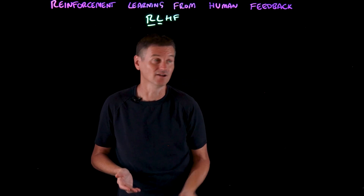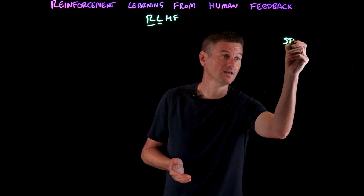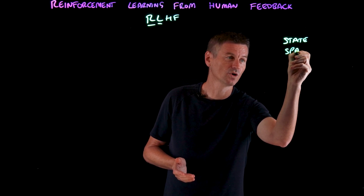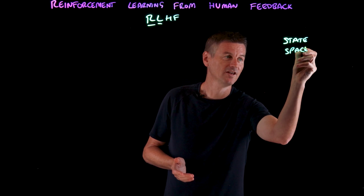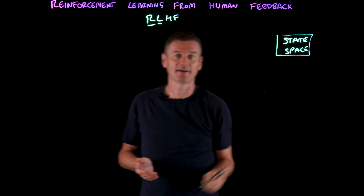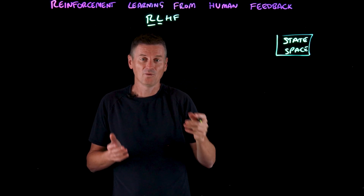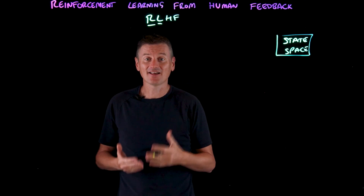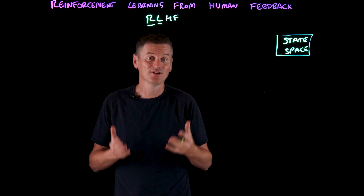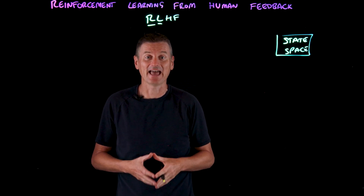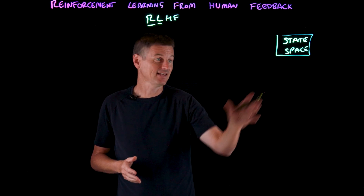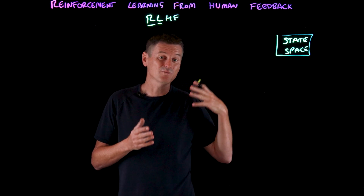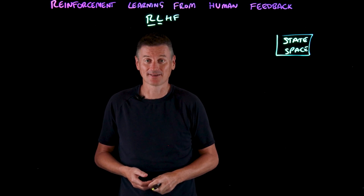So first of all, we have a component called the state space, which is all available information about the task at hand that is relevant to decisions the AI agent might make. The state space usually changes with each decision the agent makes.